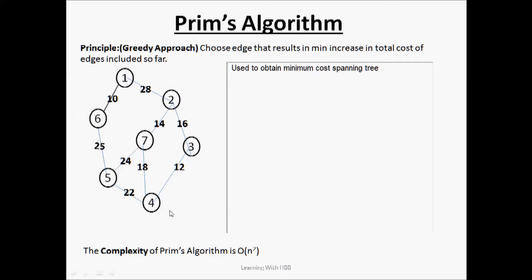Consider the example as shown. It consists of vertices labeled 1 through 7. These are the weights which are assigned to the graph edges, and we will now implement Prim's algorithm.